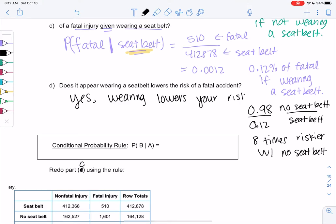It lowers your risk. It lowers from 0.98%, which feels like a small percent, but 0.12% is a much smaller percent. And that's how you find givens from a two-way table.